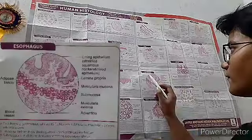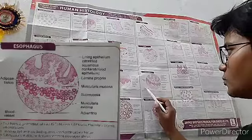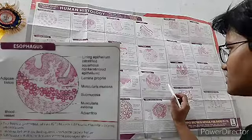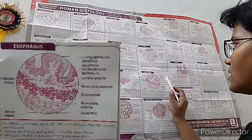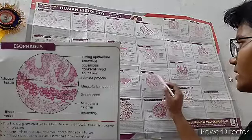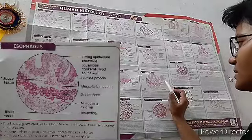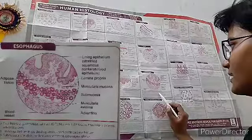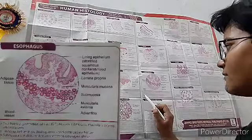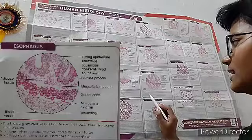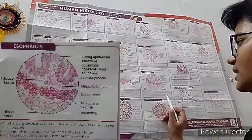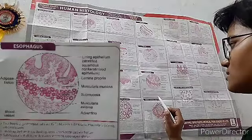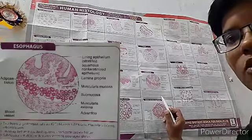Now the esophagus. Visible structures include adipose tissue, blood vessels, adventitia, muscularis externa, submucosa, muscularis mucosae, and lamina propria. The lining epithelium of the esophagus is stratified squamous non-keratinized epithelium. The full four layers of the gastrointestinal tract are present: mucosa, submucosa, muscularis externa, and adventitia. The submucosa is studded with mucous-secreting esophageal glands.